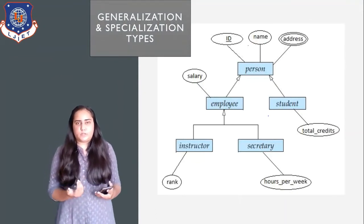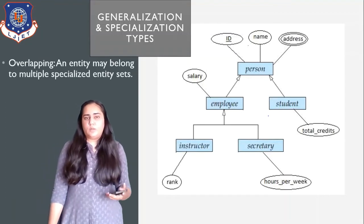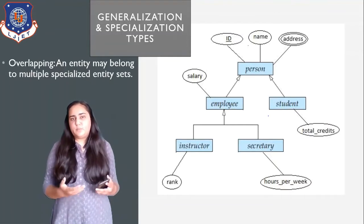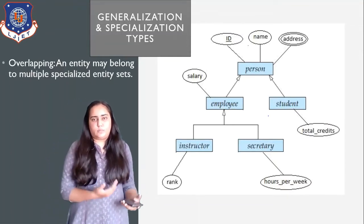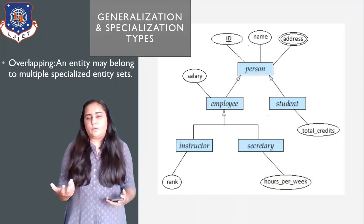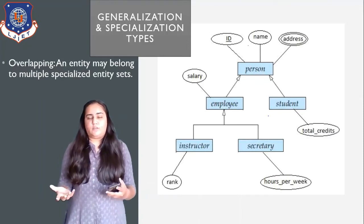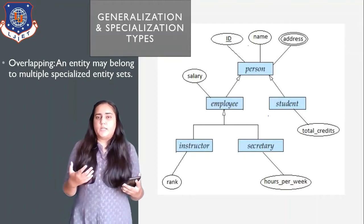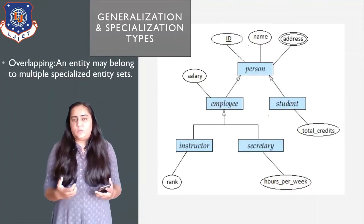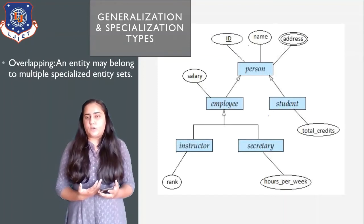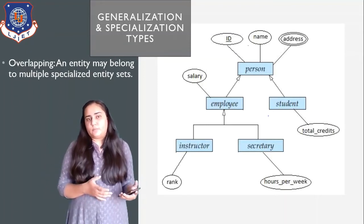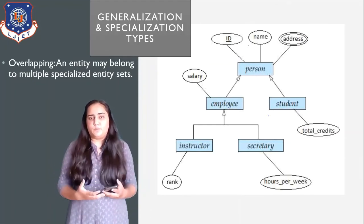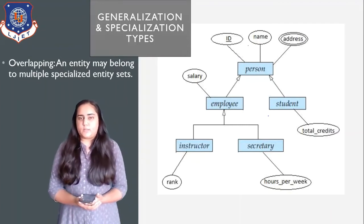There are types of generalization and specialization. The first type is overlapping, where an entity may belong to multiple specialized entity sets. For example, in a university someone might be a student as well as an employee — maybe that student is working on campus as a librarian, cleaning staff, or in the canteen. So one student could also be an employee. If student ABC is both a student and an employee, their data will be present in both the student table and the employee table. Such a specialization where there are overlappings between entities is known as overlapping generalization or specialization.